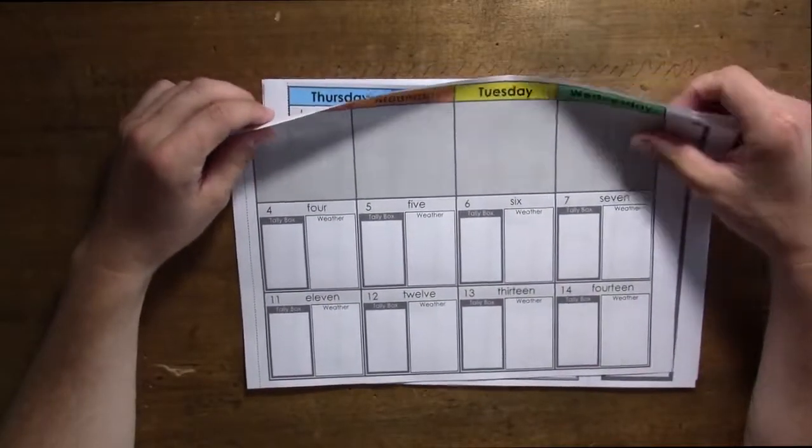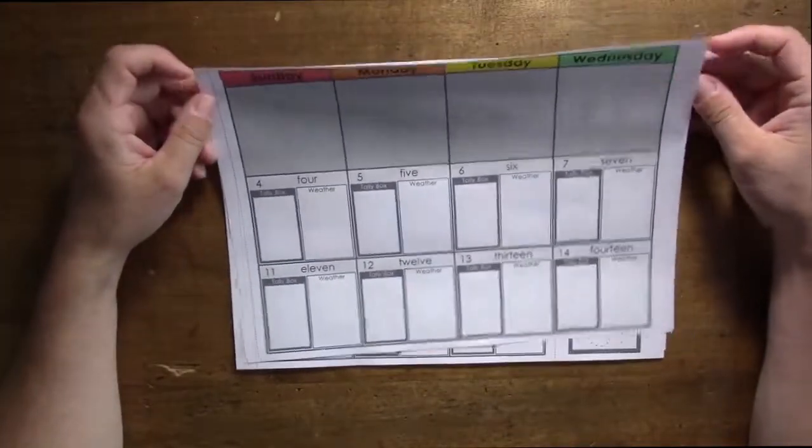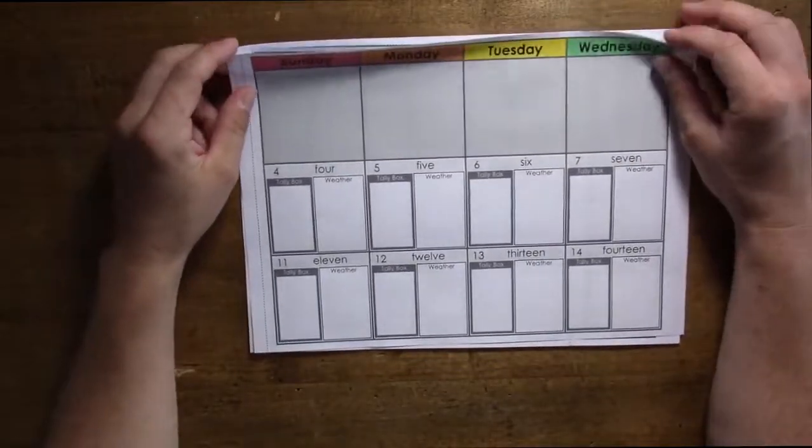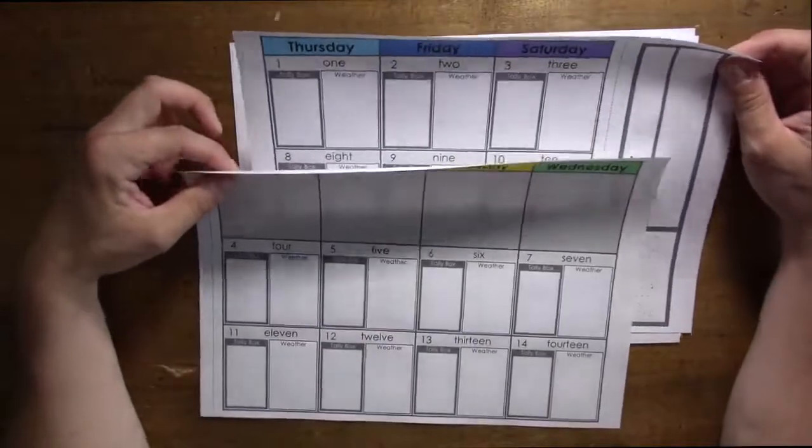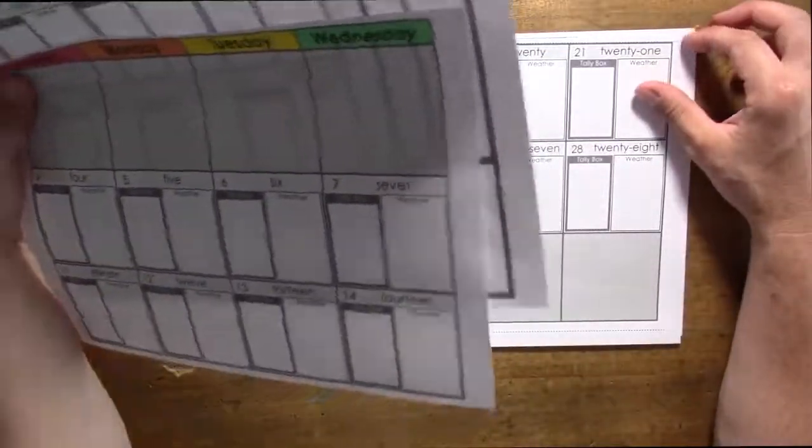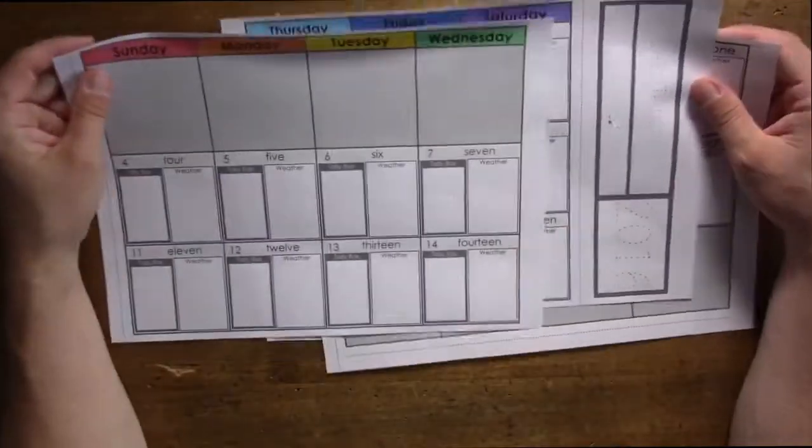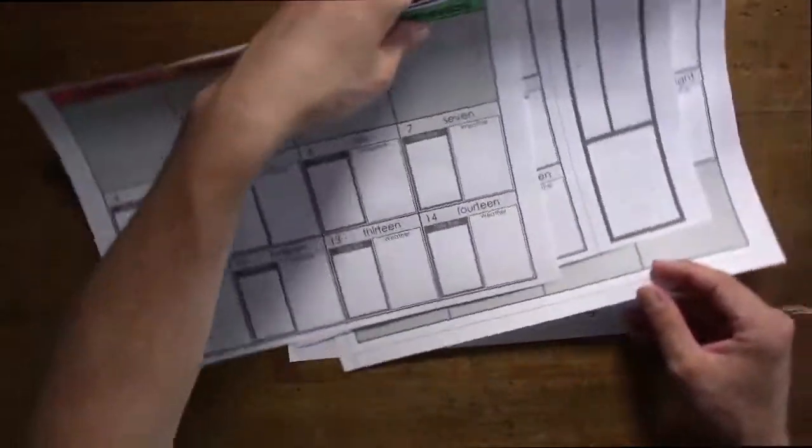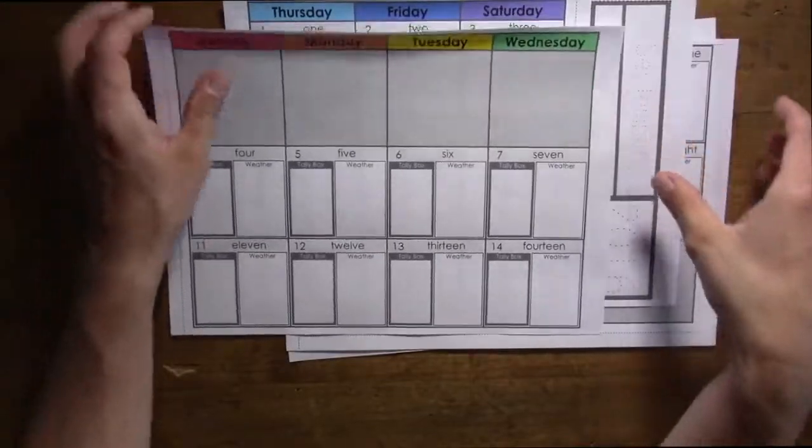Okay, so to begin, you will need to visit MyABCDad.com to download the appropriate month that you need for building your wall calendar. I'm going to be making one for September 2016, and there are four sheets there to download.